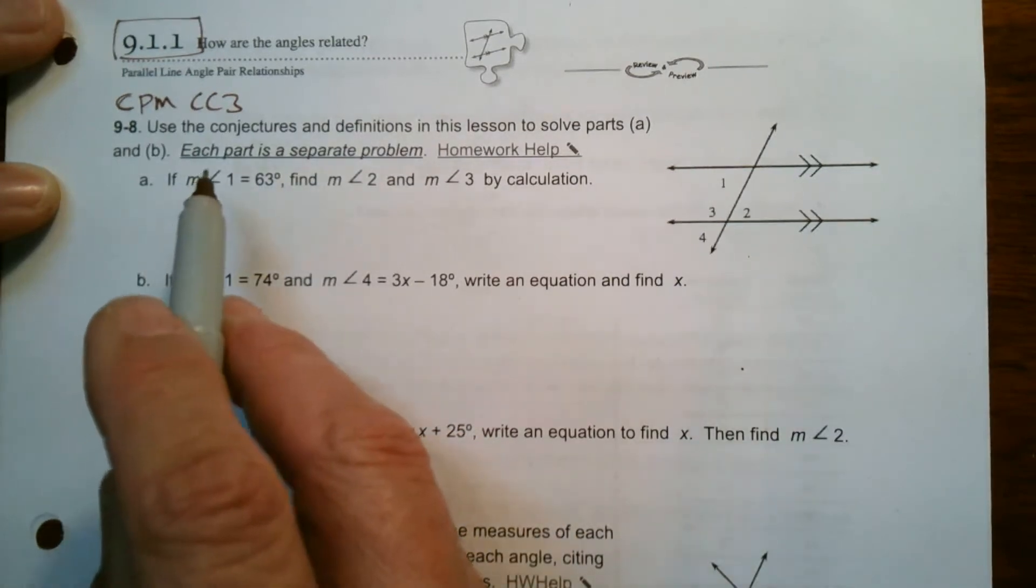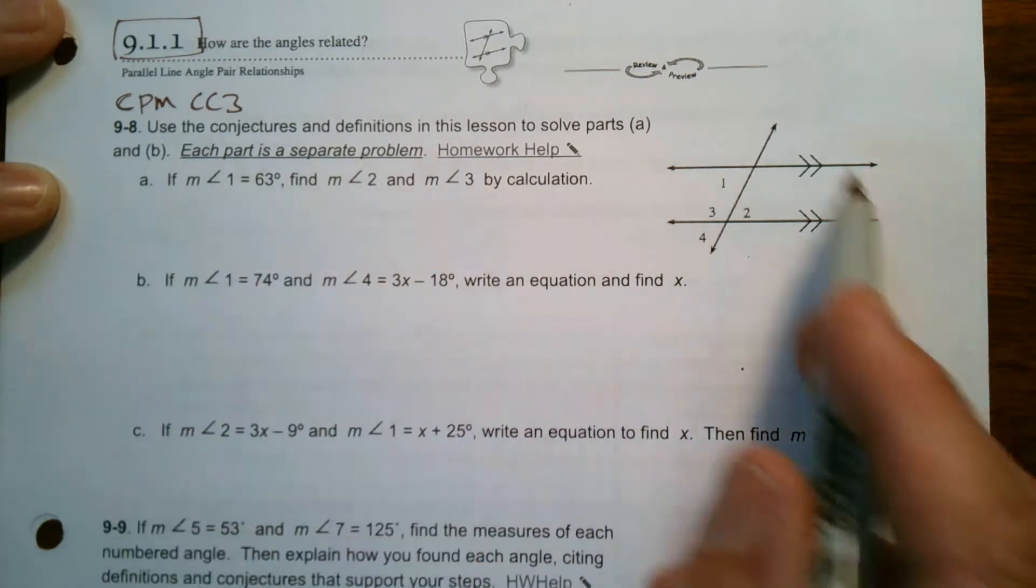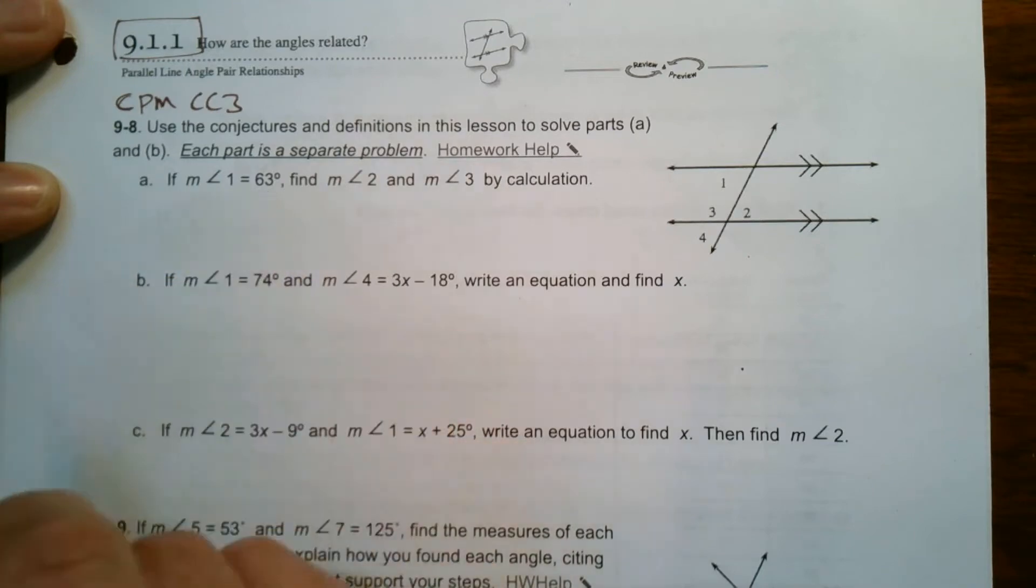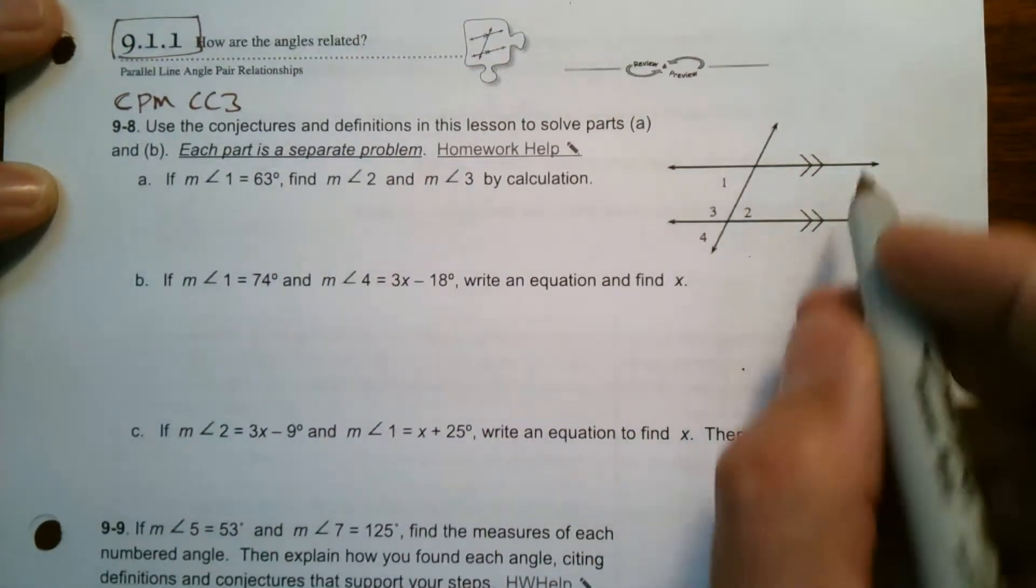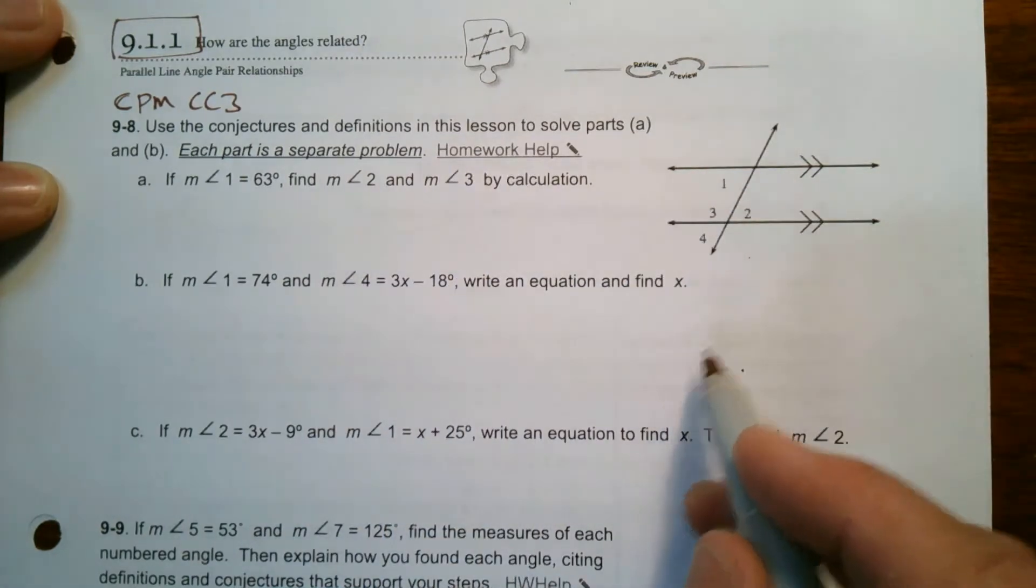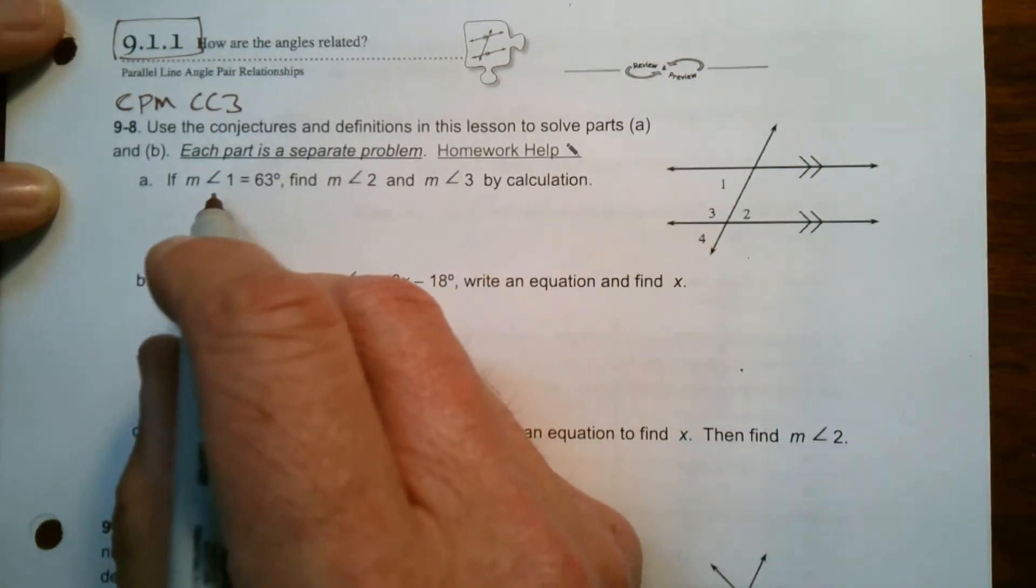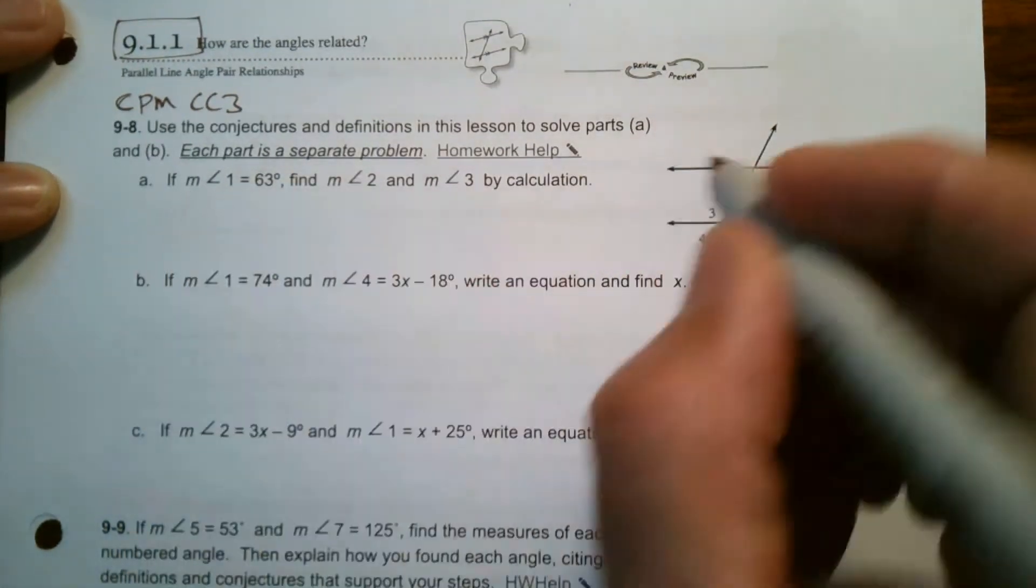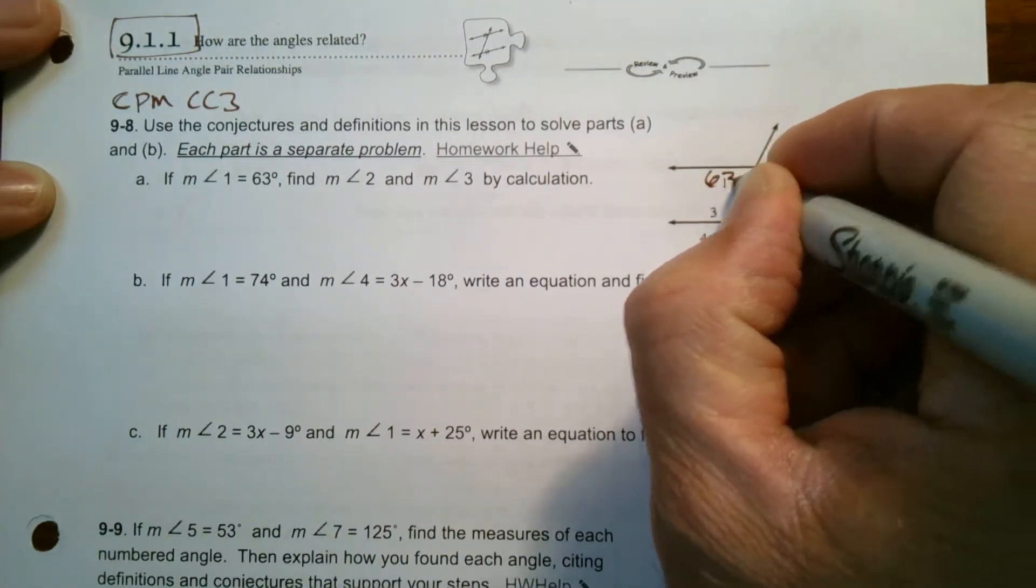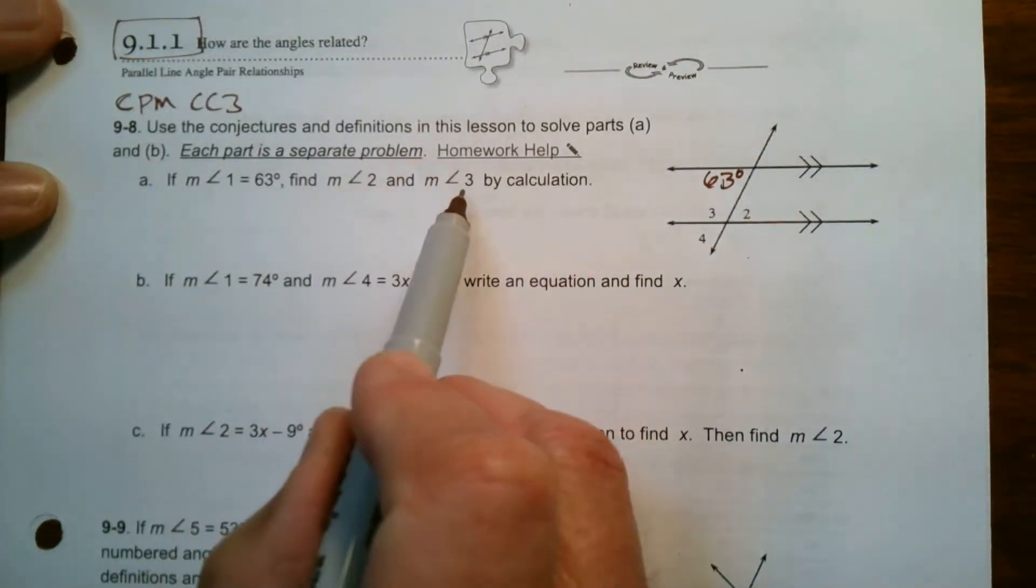So for part A, it says each part is a separate problem. Part A has us use this diagram, and it tells us that the measure of angle 1 is 63 degrees. Since we're doing that, I'll use this diagram for A, and then I'm going to redraw it for B. So here's the diagram. I notice it says the measure of angle 1, m∠1 means the measure of angle 1 is 63. So here's angle 1, it is 63 degrees.